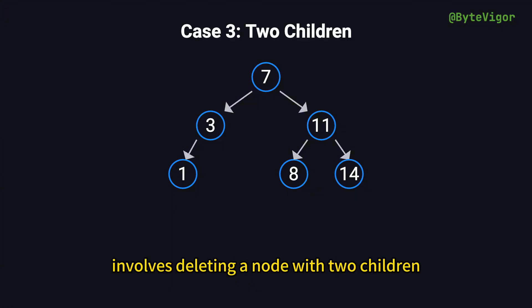The third case involves deleting a node with two children, which is the most complex scenario. For example, consider deleting the root node, node 7, which has both a left and a right child. In this situation, we cannot simply remove node 7, because doing so would disrupt the binary search tree's structure. Instead, we use a common approach.